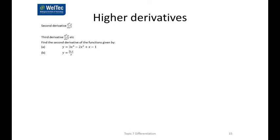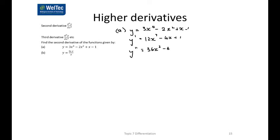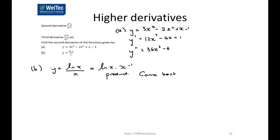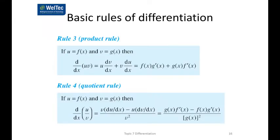Let's have a look at a couple of questions. We've got y = 3x⁴ − 2x² + x − 1. The first derivative is going to be 12x³ − 4x + 1, and the second derivative is 36x² − 4. For question b, the function is y = ln(x)/x, which we could write as ln(x) times x to the negative 1. At this stage we don't officially know how to differentiate a product — this is a product — but we will shortly, so we'll come back to this one.